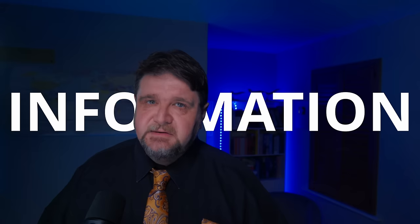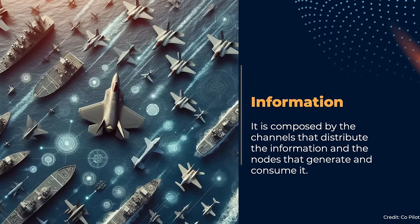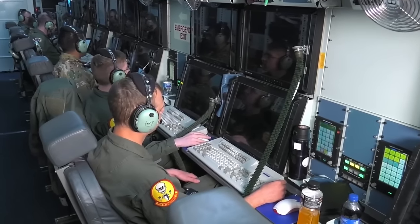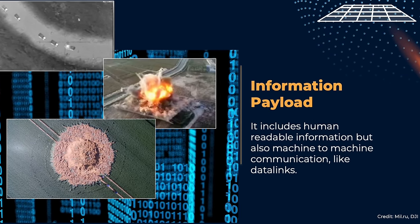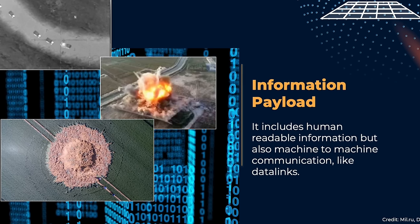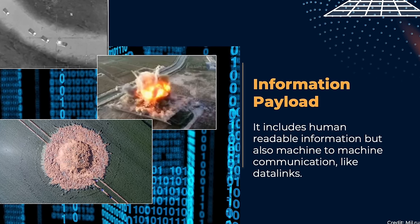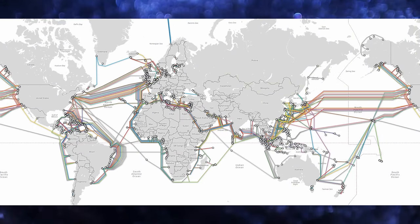The information layer is the complex of means that transport information to and from the network nodes. It may be wired, wireless, or space-based, and the nodes are both the sources and receivers of information, as well as the consumers of it. The payload of the communication layer has never been more diverse — not only classic text and voice communications, but also digital payloads like high-definition pictures, videos, and machine-readable data in the context of machine-to-machine communication.